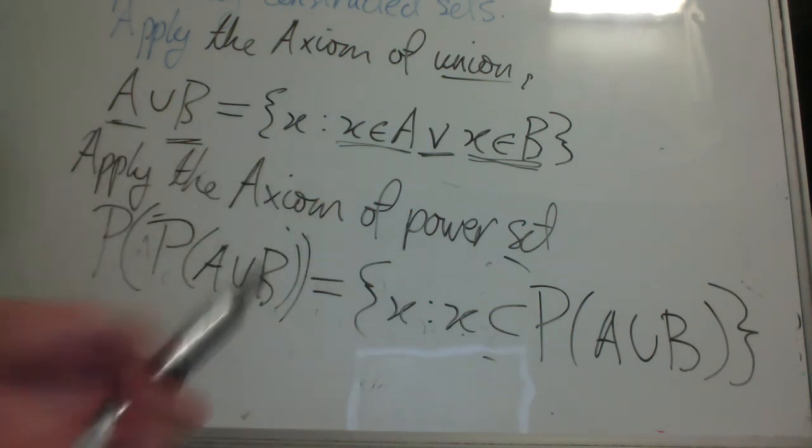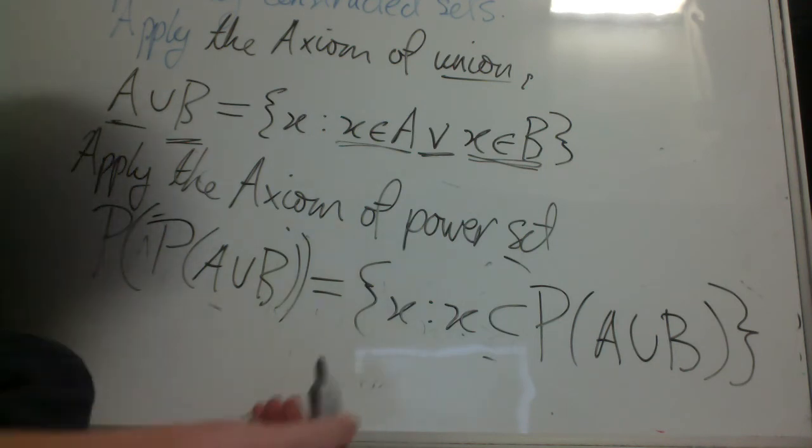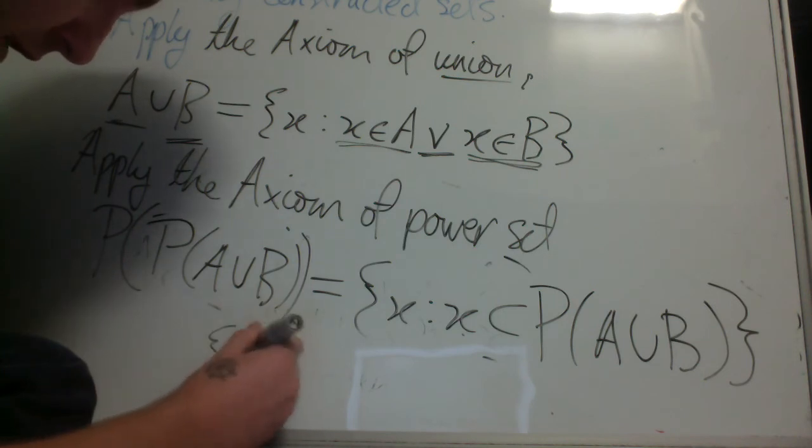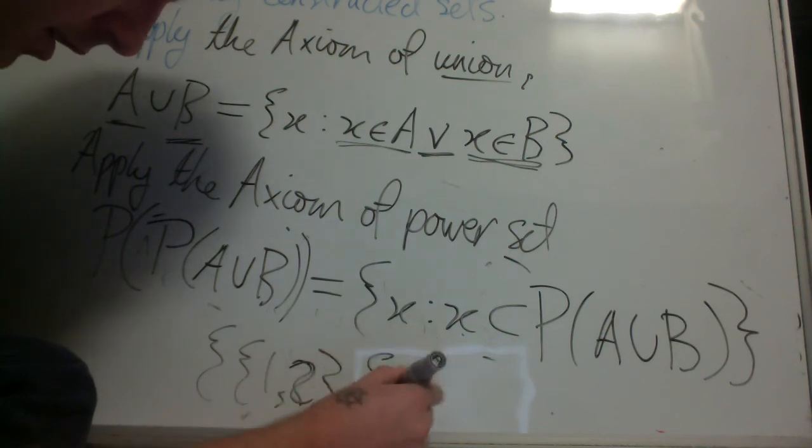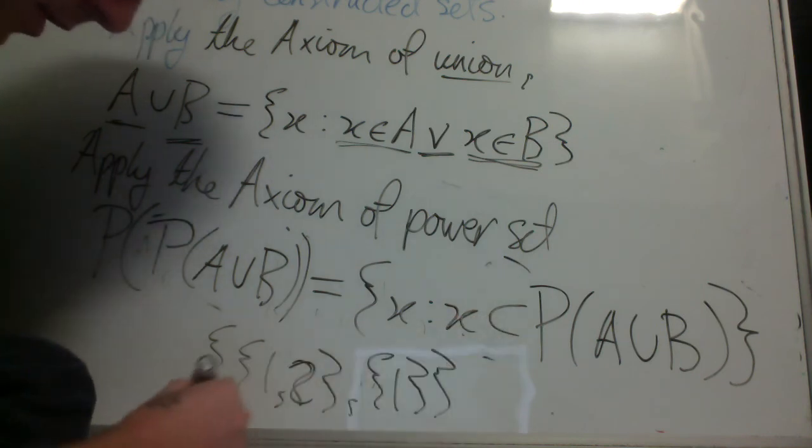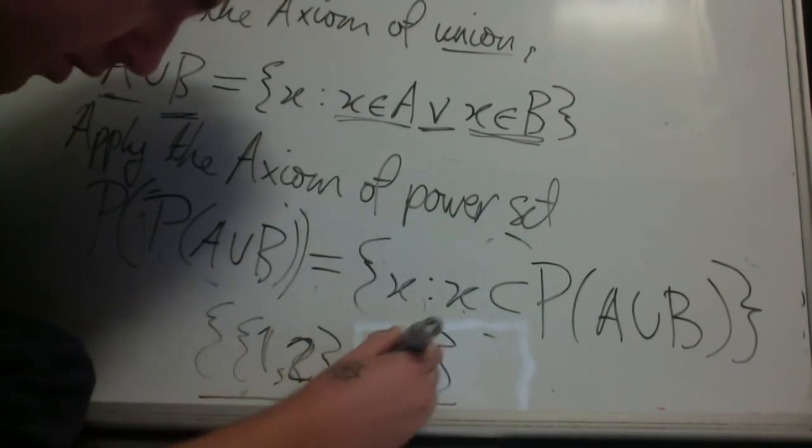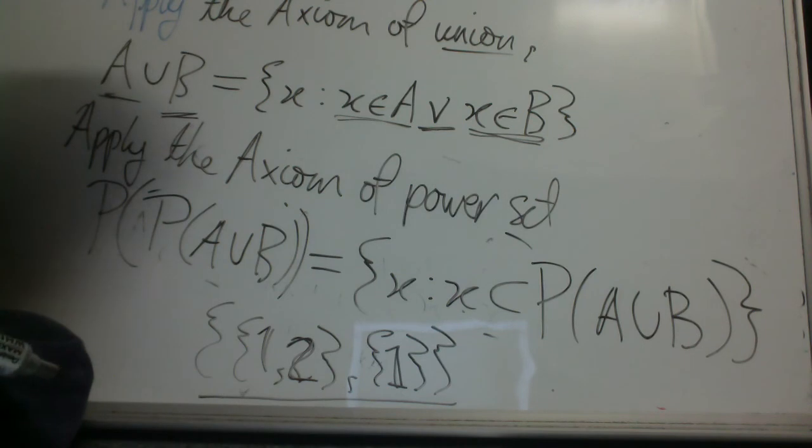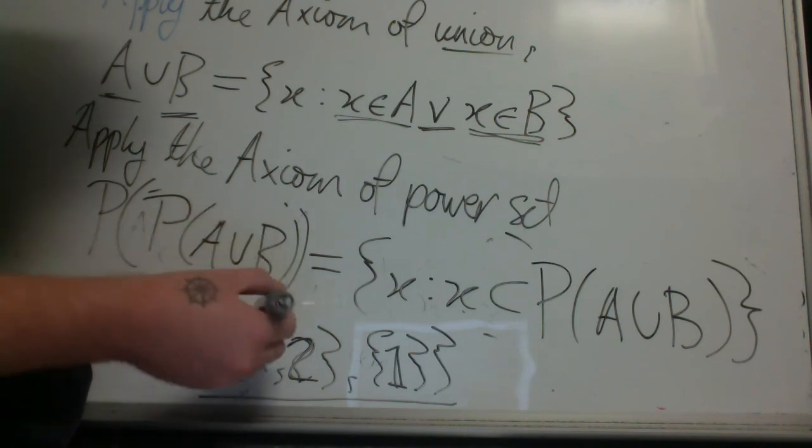So in the case where A and B are both the same set, the natural numbers, the power set of the natural numbers is the set of all subsets. And then the set of all subsets of the natural numbers would be something like, for example, the set containing the sets 1, 2 and 1. So that's an example of an element of the power set of the power set of the union of A and B when A and B are both the natural numbers.